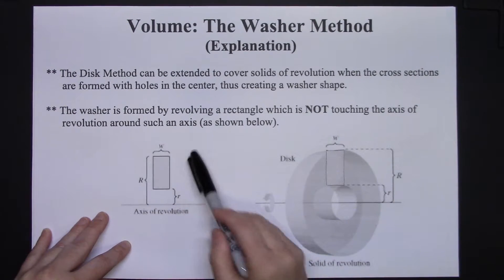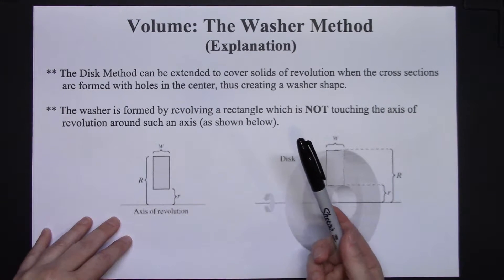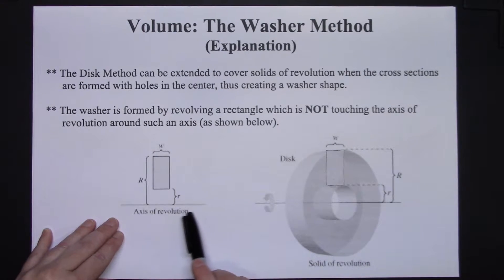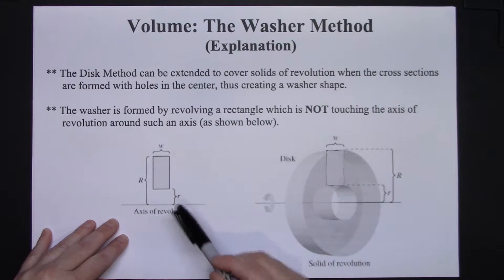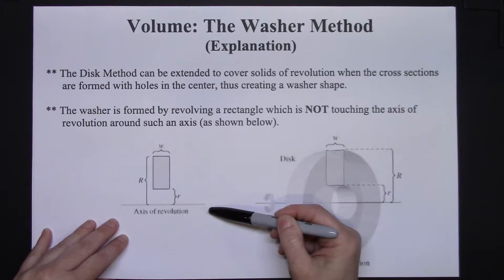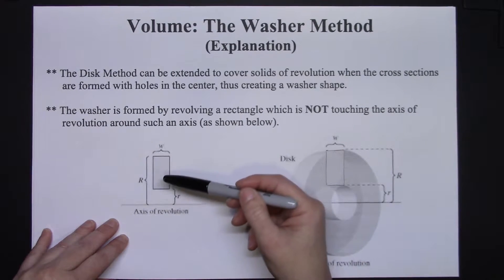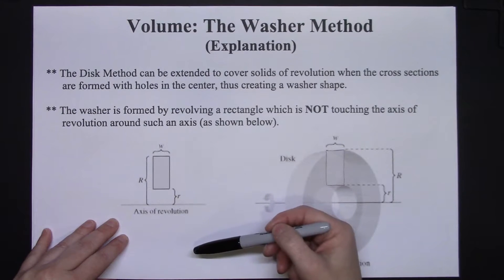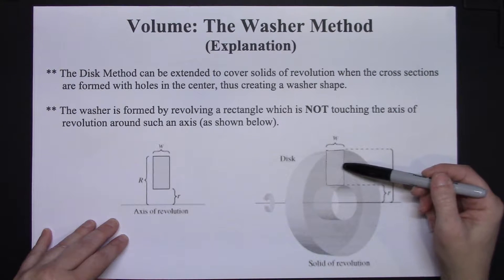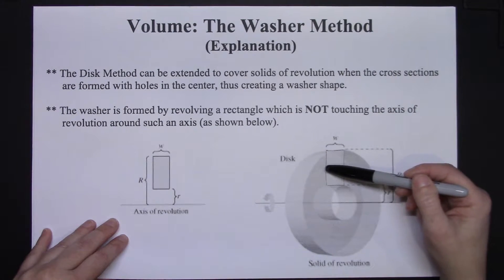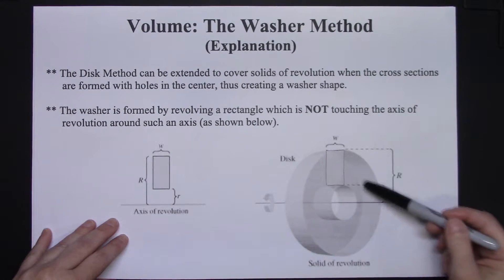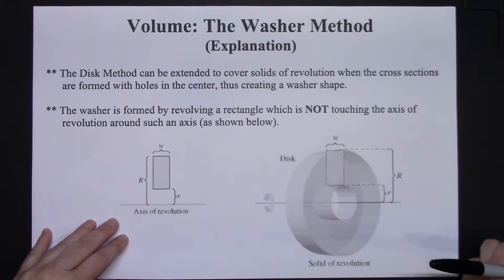In this picture right here, I'm demonstrating your scenario or setup for your representative rectangle. If this is your axis of revolution and it's horizontal, and your representative rectangle is perpendicular to the axis of revolution but it's not touching it, then when we go to revolve this around it's going to form a washer shape. That representative rectangle, as it is rotated or revolved around, forms a washer because it has that hole right there in the center.